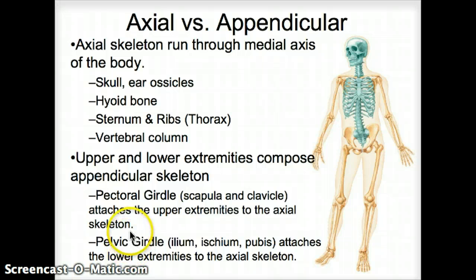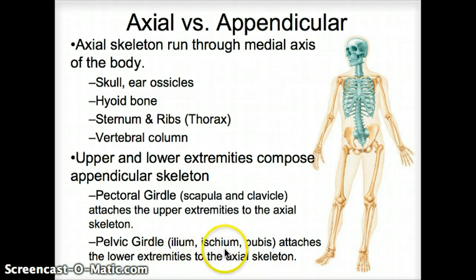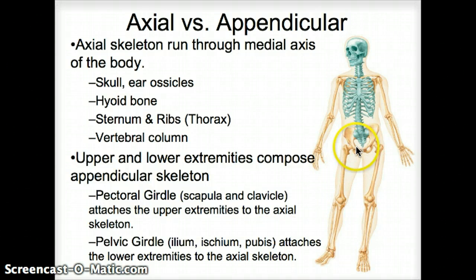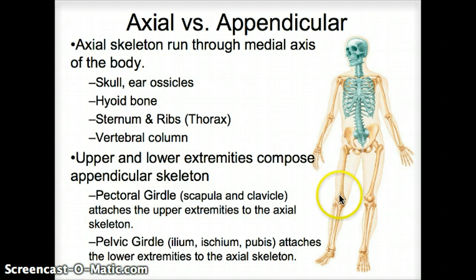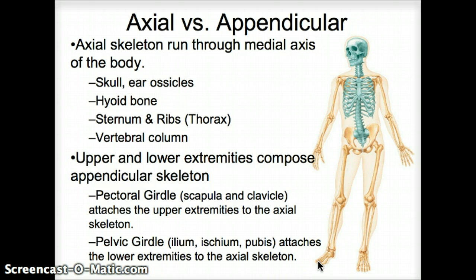In the lower extremities, you have the pelvic girdle — that's the pelvis. The pelvis is made up of three bones called the ilium, the ischium, and the pubis. They are fused together, so when you see a pelvis it's one bone, but in a fetus they exist as three independent bones. That pelvis connects the sacrum to the upper thigh bone, which is the femur. Then we have the knee with the patella, and then the fibula and the tibia, and the ankle and the foot. Those are the lower extremities.